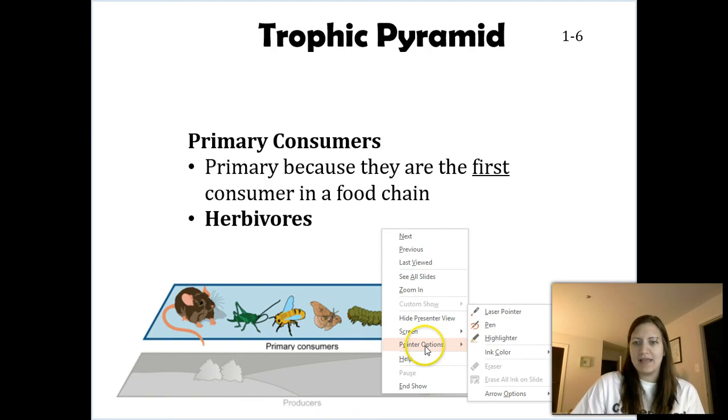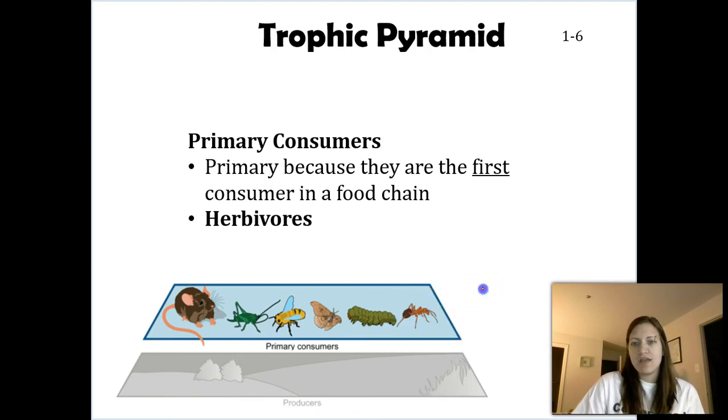One way to shorthand that, I'm going to draw here, is I have this one, referring to primary or first, and then this little degree symbol. That denotes primary. So we have our primary consumers. And again these are going to be our herbivores.